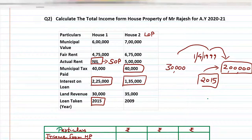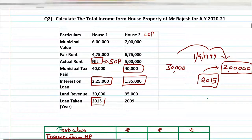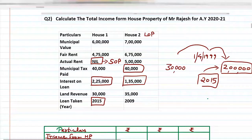Question number 2 — House Property: Calculate the total income from house property of Mr. Rajesh for Assessment Year 2021.